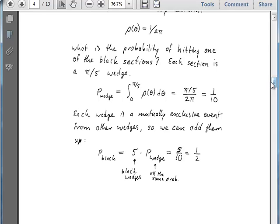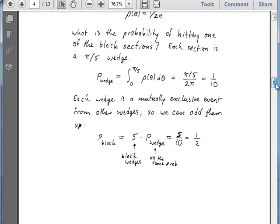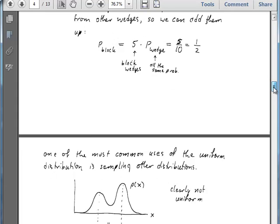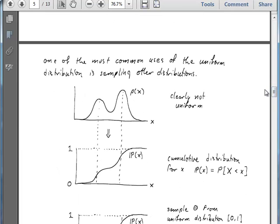Let's do something a little bit more sophisticated with the uniform continuous probability density. And think about how we use this in practice. So very commonly, we're thinking about the uniform probability density on the intervals 0 to 1. And we're using it to sample other distributions.